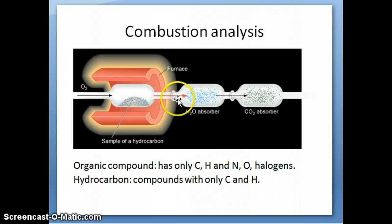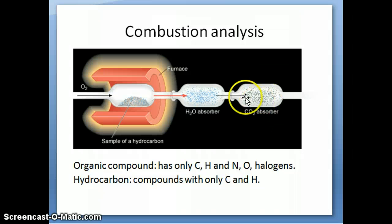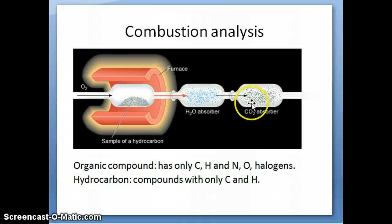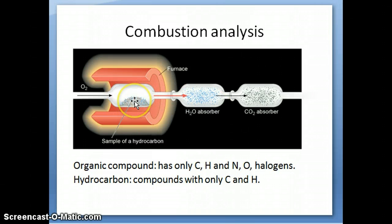Those two products are formed as gases and flow out of the furnace. You use a compound that absorbs all the water, trapping it in one container, and the carbon dioxide is also absorbed similarly using another compound. You can then weigh these containers before and after the reaction to get the mass of water formed and the mass of carbon dioxide formed. Using those two masses, you're able to go back and figure out the formula of the organic compound.